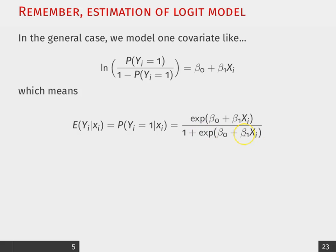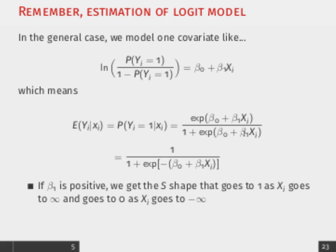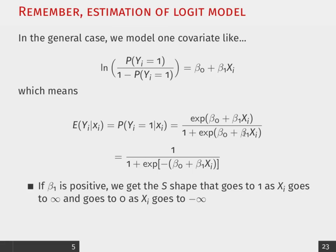over 1 plus, again, an exponentiated fitted regression. Now, this means that if beta 1 is positive, we get an S-shape that goes to 1 as X goes to infinity and goes to 0 as X goes to negative infinity.